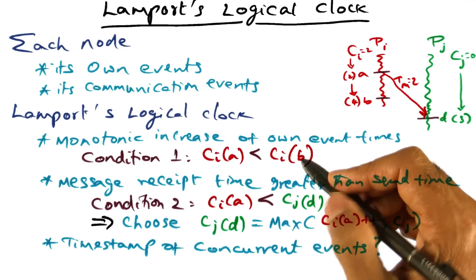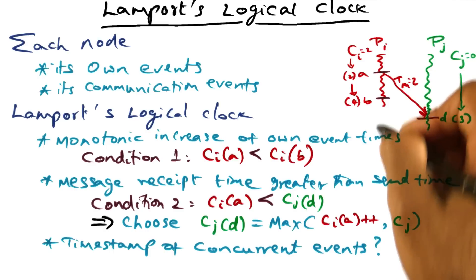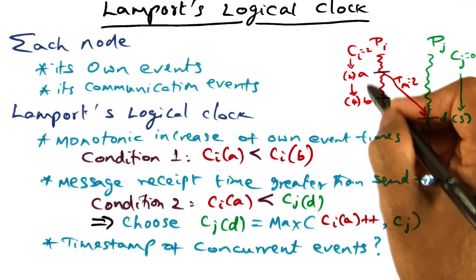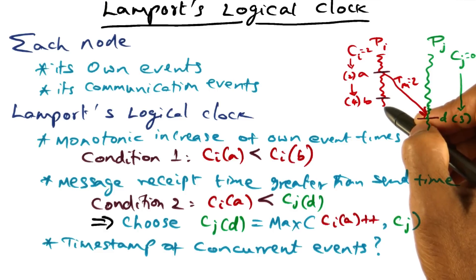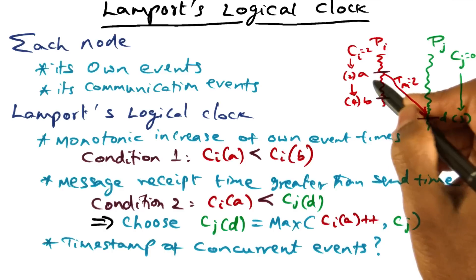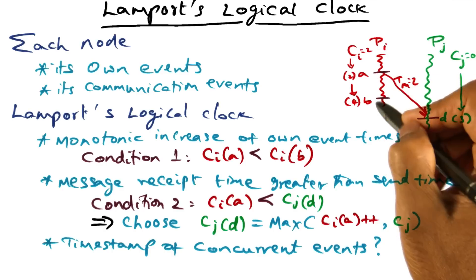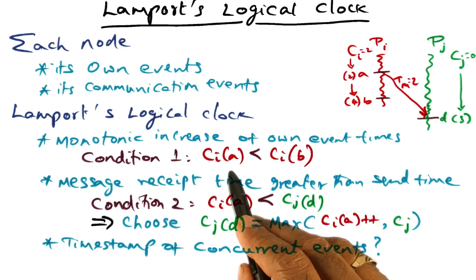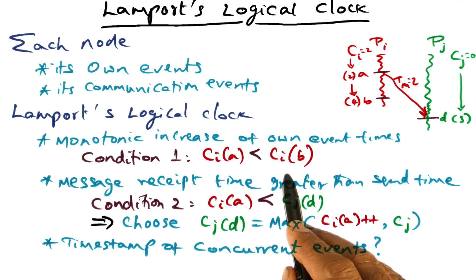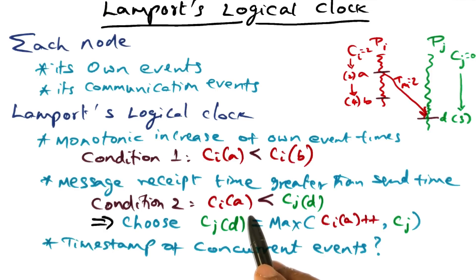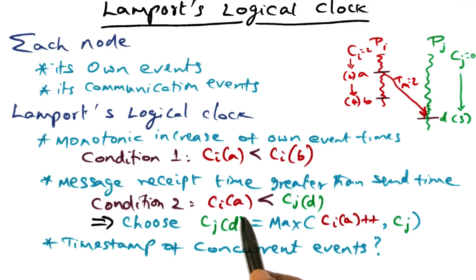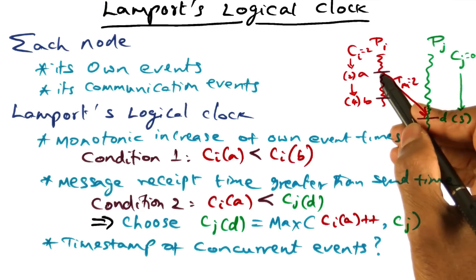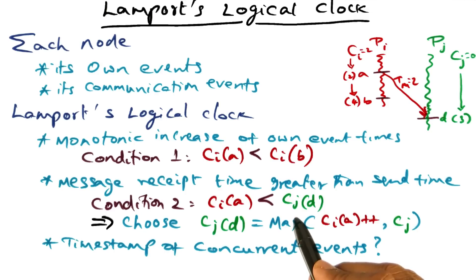So the two conditions we've talked about: first, for events in the same process, we use a monotonically increasing counter to associate timestamps. If events A and B are in the same process, and A happened before B because the process is sequential, then the timestamp of A must be less than the timestamp of B. Second, if A is a send event on some process and D is the receive event on another process, then the receive event must come after the send, so CI(A) must be less than CJ(D).